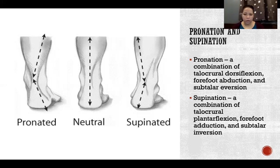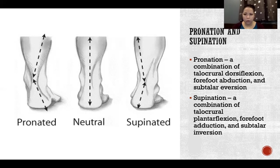It's only when pronation or supination become extreme — hyperpronation and hypersupination — that it becomes a problem. We can observe this by looking at the calcaneal tendon: in a neutral position, the calcaneal tendon should be vertical and pretty straight. We can see the angulation in either direction as pronation or supination occurs, and that angle will be more extreme the more extreme the pronation or supination is.